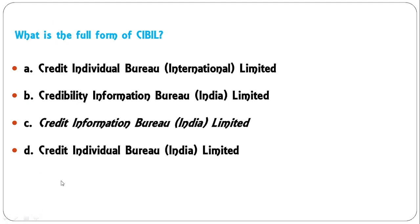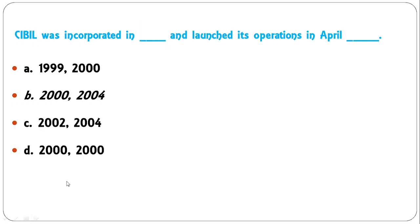What is the full form of CIBIL? CIBIL is a famous term used in credit rating and credit history of people or organizations. The correct full form is Credit Information Bureau India Limited, so C is the correct answer.